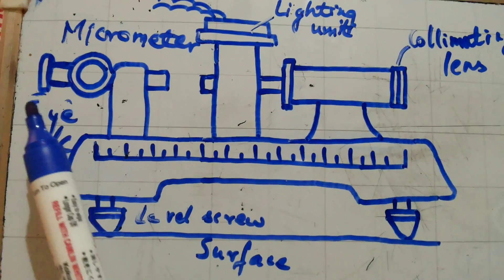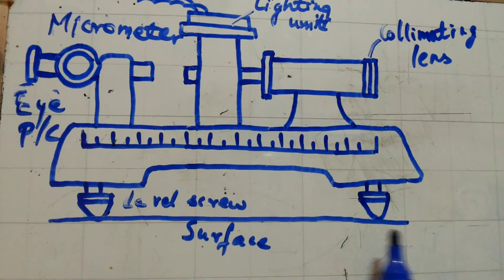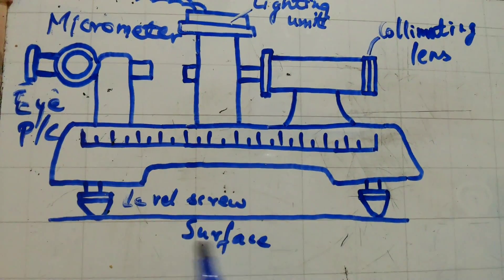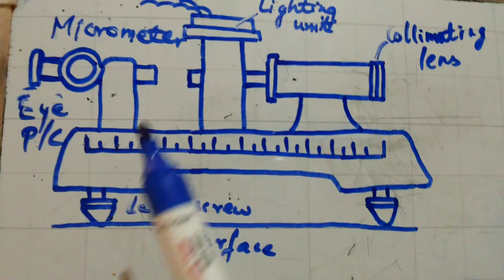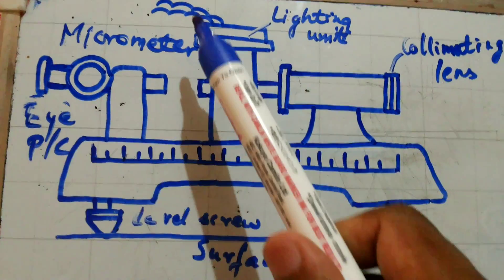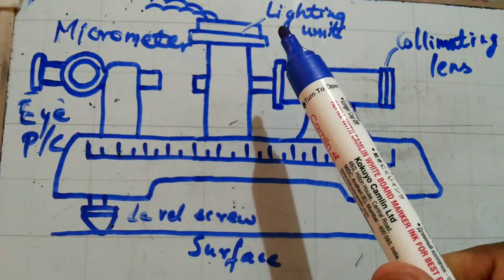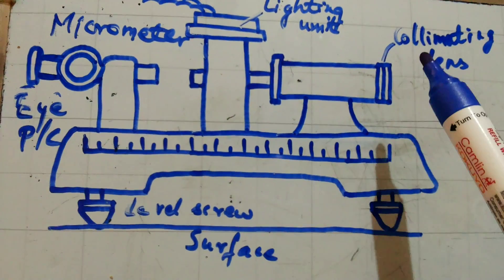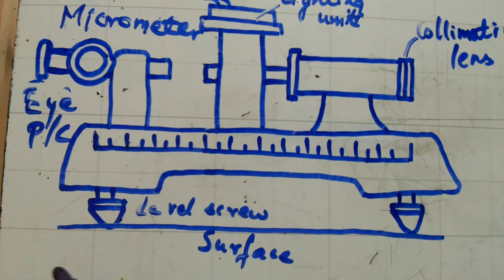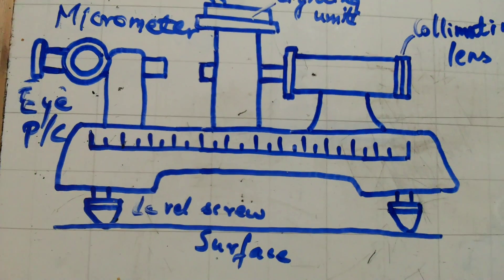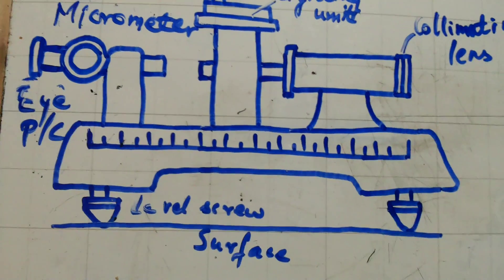This is the micrometer and this is the eyepiece. It is kept on the surface and adjusted with the help of a level screw. This is the electric supply, this is the lighting unit, and this is the collimating lens. This is a simplified version of an auto collimator.